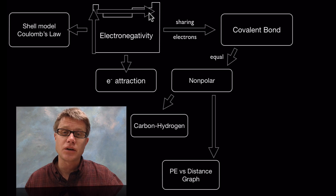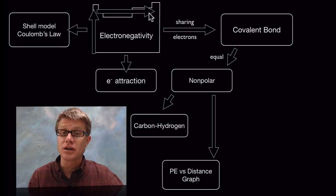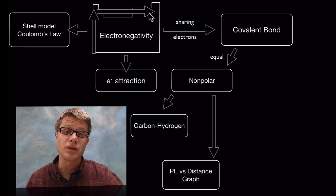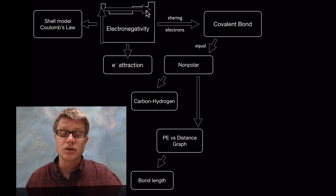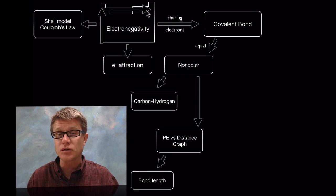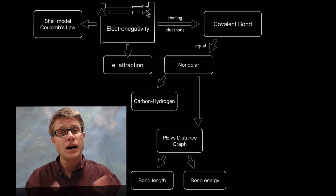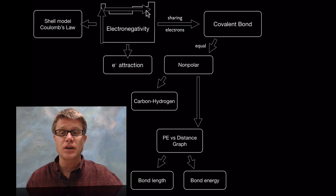We can look at these bonds using a graph where we graph the potential energy on one side and then the distance between the atoms on the other side. What becomes apparent is going to be the bond length, how far those atoms are apart, and then the bond energy, how much energy would we have to put in to break those atoms apart.